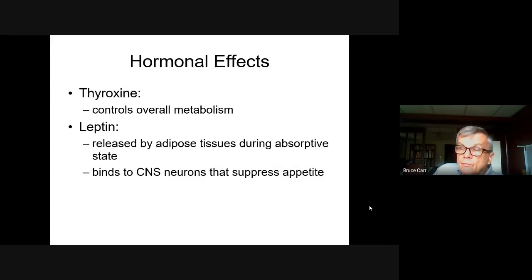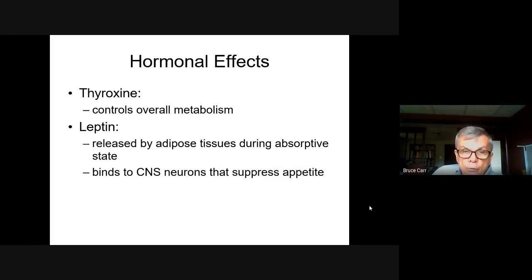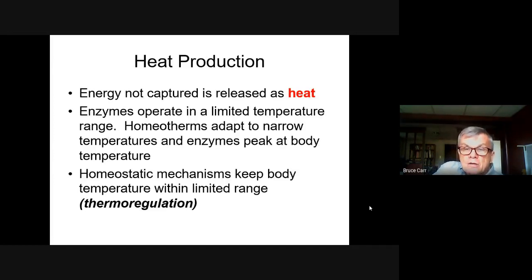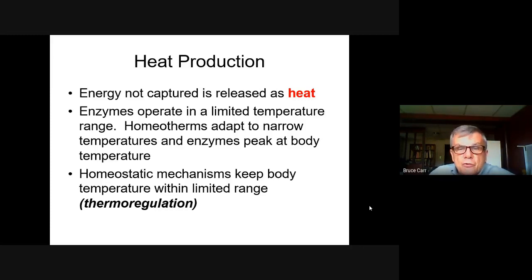Hormones affect specific metabolic states. The thyroid — located in the front of the throat near the Adam's apple — is where thyroxin regulates the overall metabolic rate in the body. More thyroid activity means a higher rate of metabolism, and the opposite also applies. Leptin is released by adipose tissue during the absorptive state and has a suppression-of-appetite effect by affecting the central nervous system. Heat production is a byproduct of aerobic respiration.